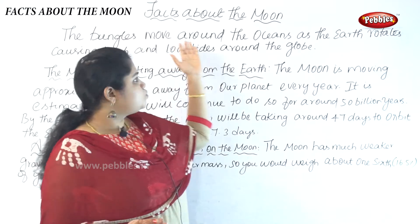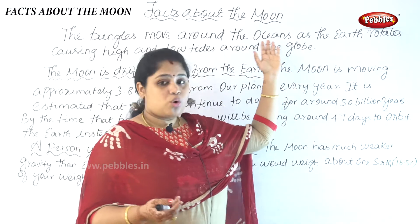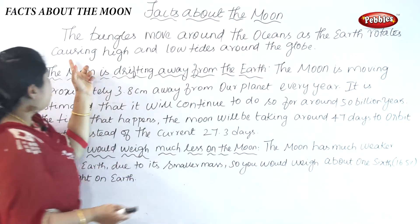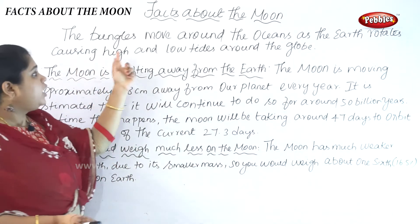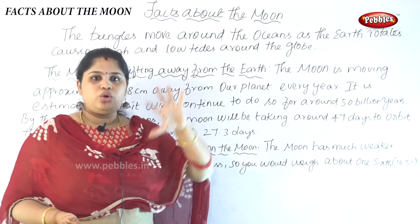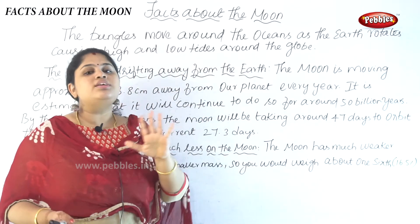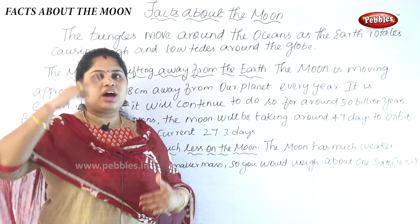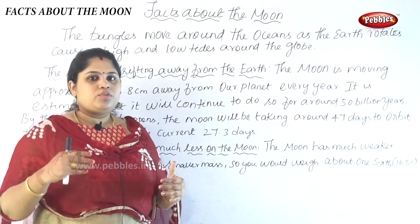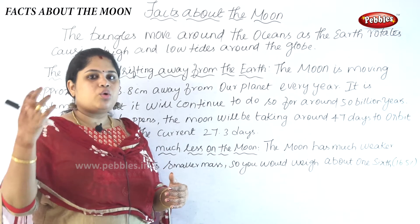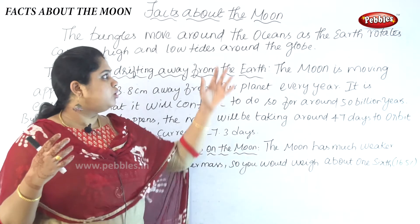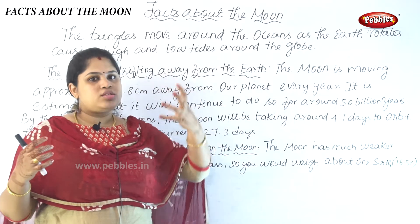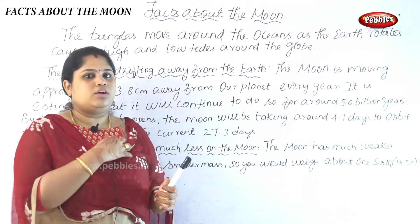When the bulges move around the ocean as the earth rotates, they cause high and low tides around the globe. This is the reason why the globe has low and high tides — because the bulges are rotating around the ocean.